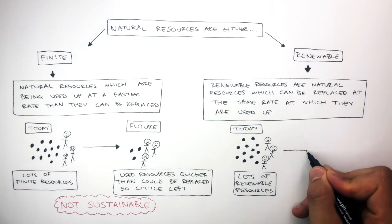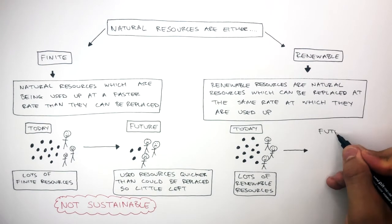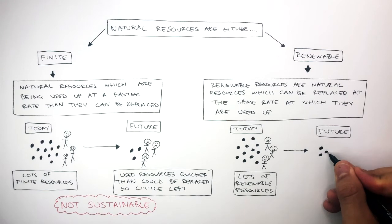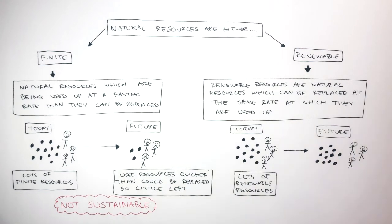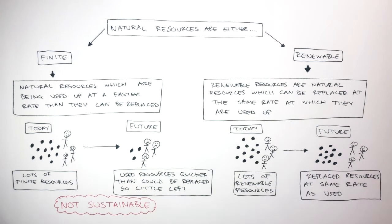And as time passes, and we're now in the future, we still have lots of renewable resources. So these future generations are happy, as they've replaced the resources at the same rate as they've used them. This is a sustainable way of living, as the needs of the current generations can be met, whilst the needs of the future generations can also be met.